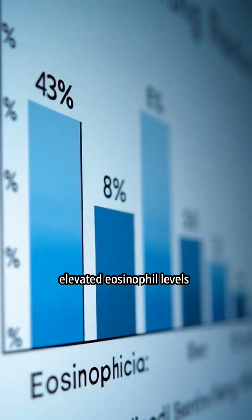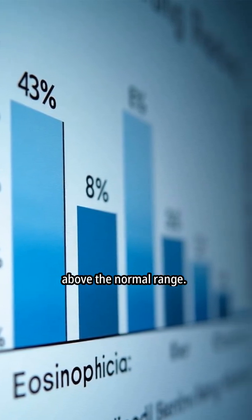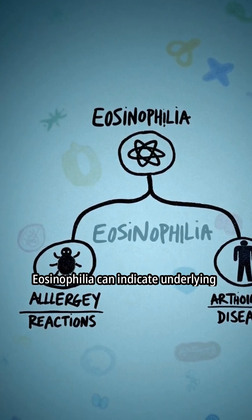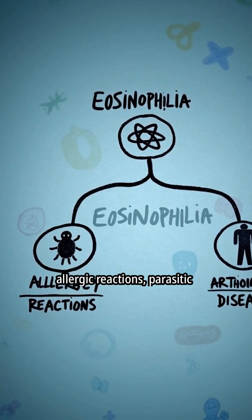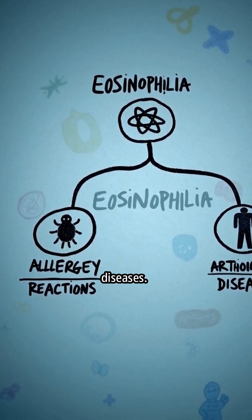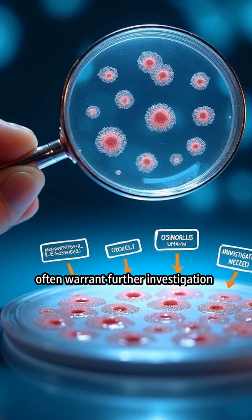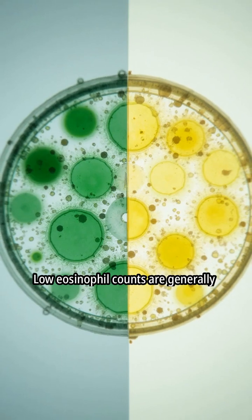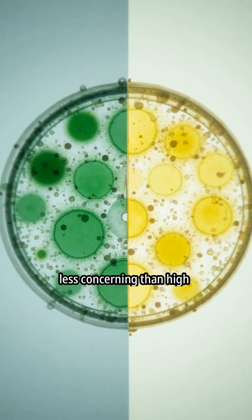Eosinophilia is defined as elevated eosinophil levels above the normal range. Eosinophilia can indicate underlying allergic reactions, parasitic infections, or autoimmune diseases. Elevated eosinophil levels often warrant further investigation to determine the root cause.